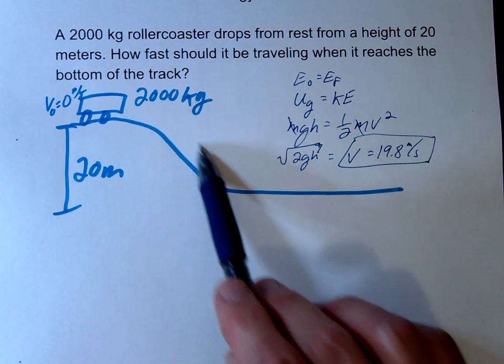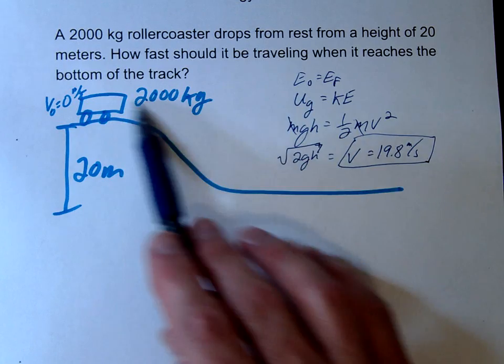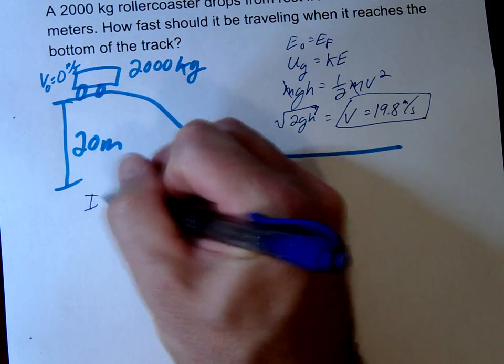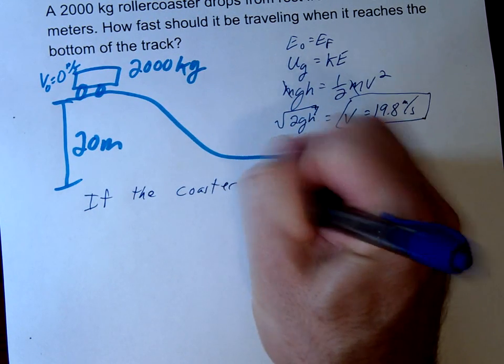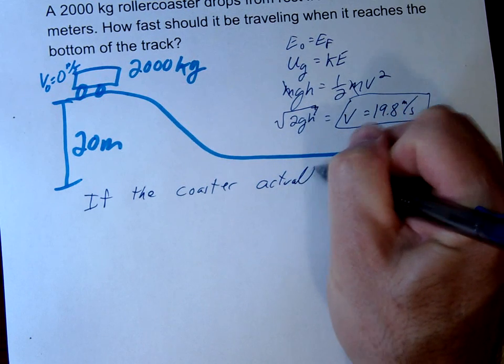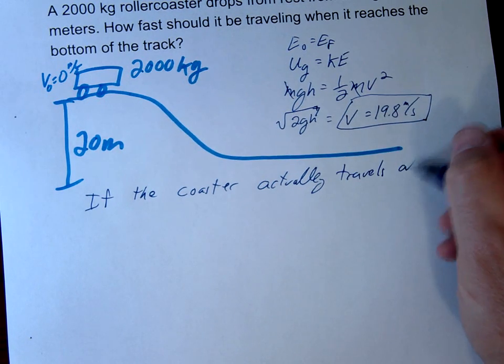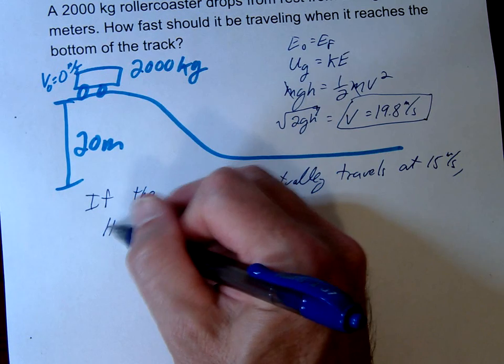There's going to be some sound energy. There's all kinds of ways that we're going to be losing energy on the way from here to here. So let's say in reality, the coaster actually is traveling at 15.